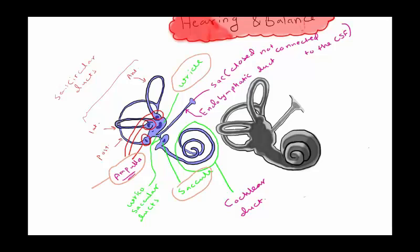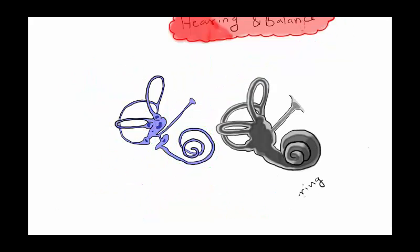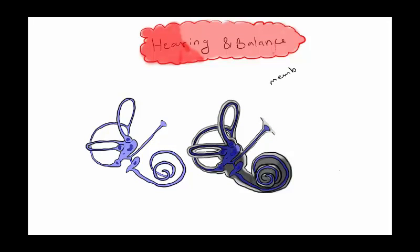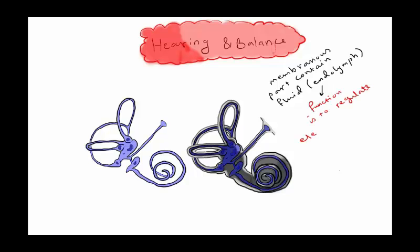The utricle, saccule, and ampulla are the organs of balance, while the cochlear duct contains the organ of hearing. The membranous part contains a fluid called endolymph, which regulates the electrochemical impulses of the hair cells and contains a large amount of potassium.